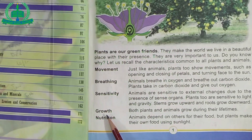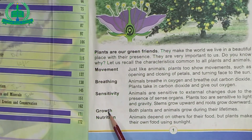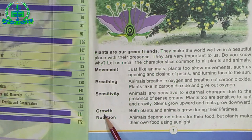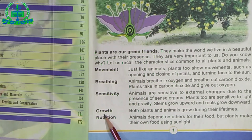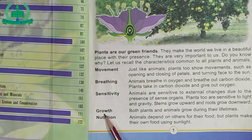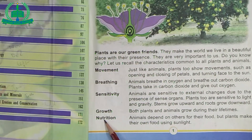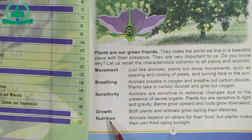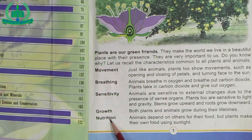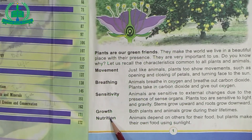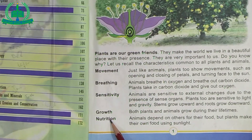The fourth characteristic is Growth. What is growth? Like every living thing, plants also grow during their lifetime. The fifth characteristic is Nutrition. What is nutrition? Plants can make their own food using sunlight, unlike animals who depend on others.